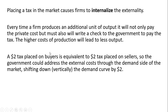A $2 tax placed on buyers is equivalent to a $2 tax placed on sellers. So the government could address external costs through the demand side of the market, shifting the demand curve down vertically by $2. The tax incidence — the tax burden — is unchanged regardless of which side of the market is taxed.